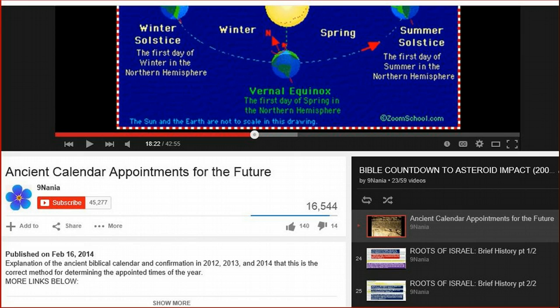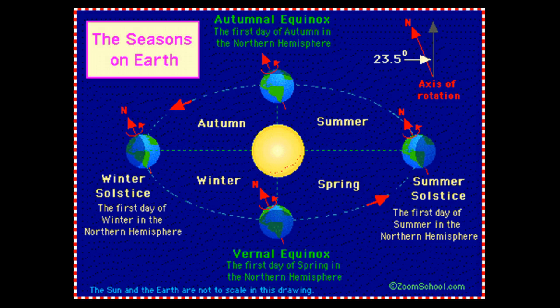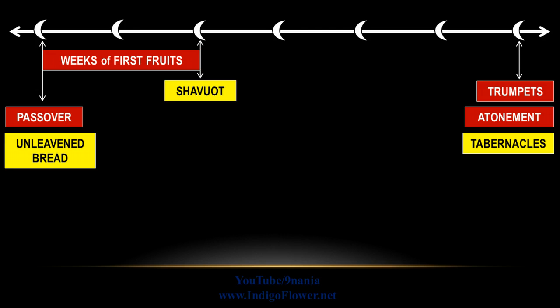The short version is that Exodus 34:22 says the turning of the year should be observed at both the appointed time of the weeks of Firstfruits and the appointed time of Tabernacles. That is the turning of the year, and there are four turnings: the spring equinox, the summer solstice, the fall equinox, and the winter solstice. So Exodus 34:22 says to observe the two turns that occur on the appointed time of the weeks of Firstfruits and on the appointed time of Tabernacles.